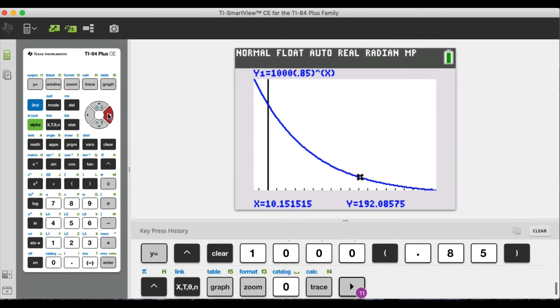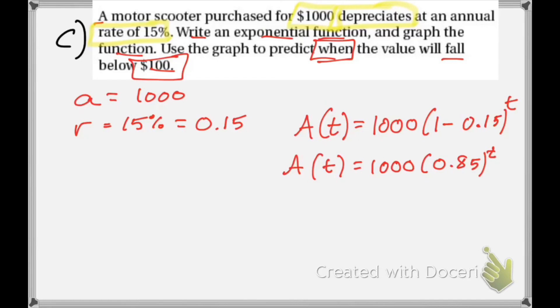I'm at 251 right now for the y value. That's the value of the, what is it, scooter. And we drop to below, so for it to be below $100, that's going to be about 14.2 years. So after 14.2 years, the value of the scooter will be below $100.